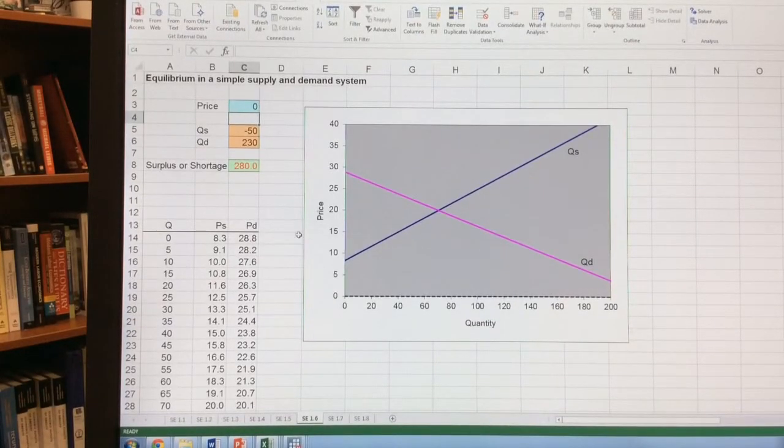Spreadsheet example 1.6 is already set up with a lot of information for us. It has built in a quantity supplied and quantity demanded. This comes from the class notes.